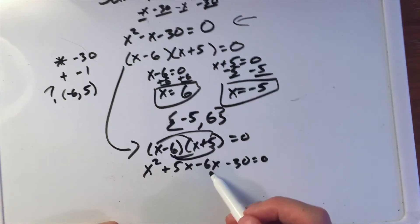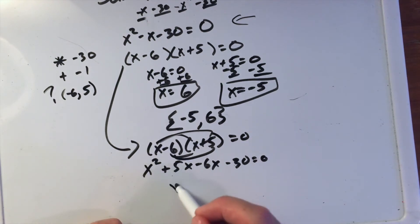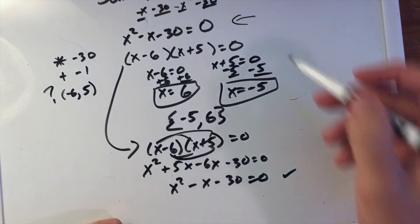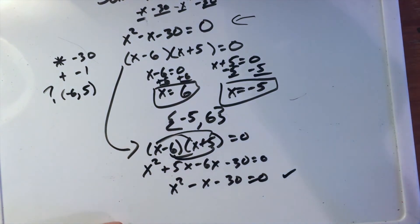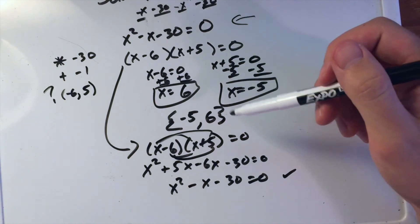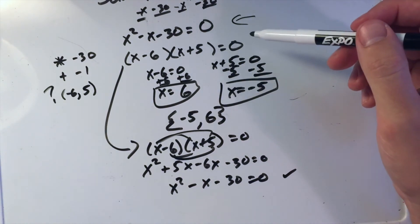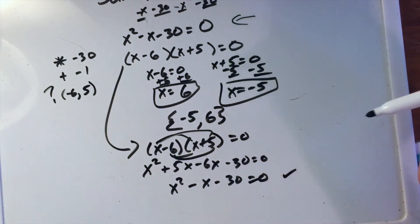5x minus 6x is negative x, or negative 1x. So we have x squared minus x minus 30 equals 0, and we're back to where we were. It's a good way to check our work and see if we can check our factoring.